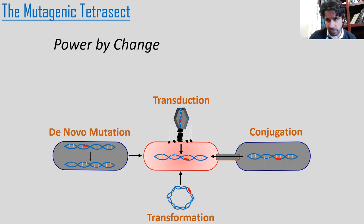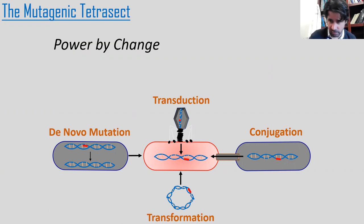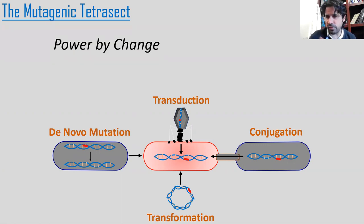These four don't necessarily occur simultaneously, but species like E. coli, for example, can engage in all four at various points in its life cycle. And depending on the selective pressures it faces, it will use these to acquire or get rid of genes — this is essentially a mutation of its genome.